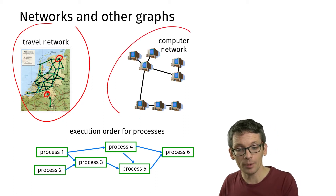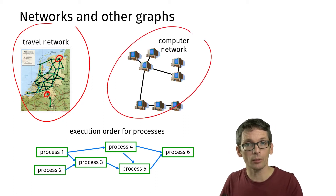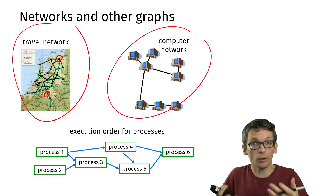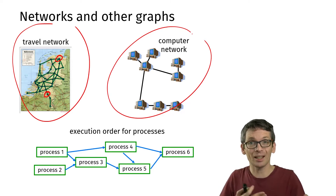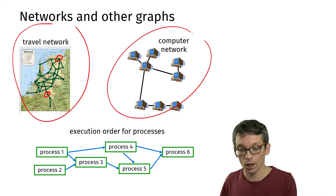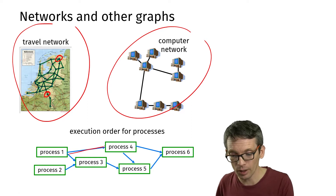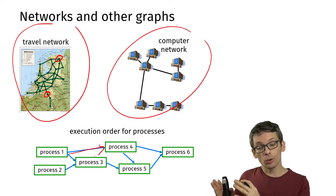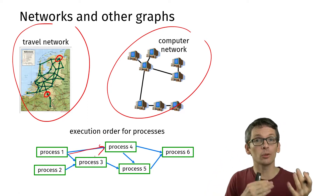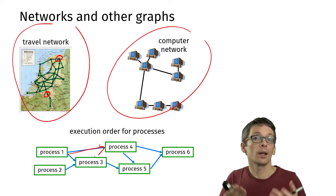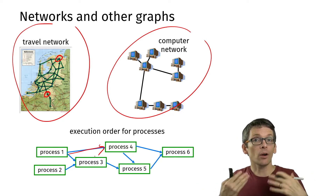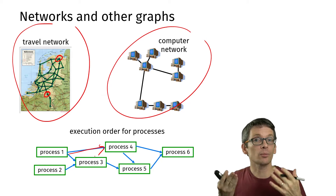Another example is a computer network — computers and they're connected. A third example is processes that we want to execute, but there are dependencies between them. An arrow here says process 1 needs to be executed before we can do process 4. The question is: is there a consistent way of ordering these processes?